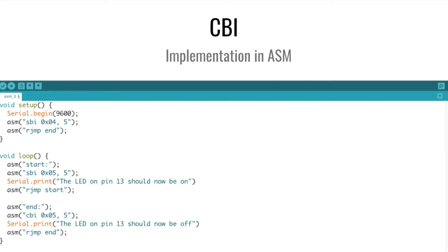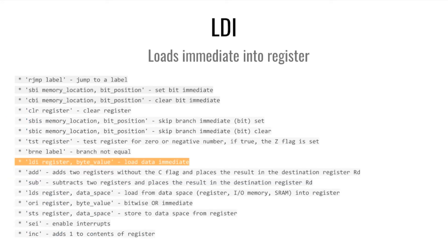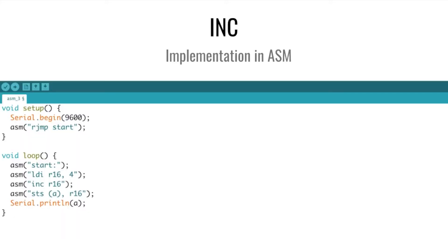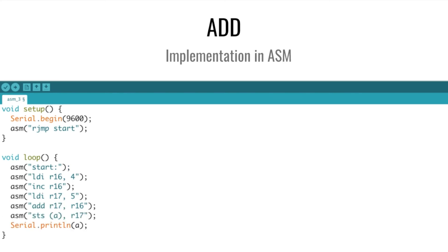LDI loads data immediately into a register. Using LDI with increment we can see how to move data across registers — this was the whole point of the project. We have a label start, load immediate into register 16 the number 4, then increment register 16 and store that value as a and print a to prove that we've actually moved 4 across the registers. We can also use add to prove that we can add data across registers and print out the output.